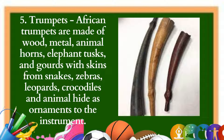5. Trumpets: African trumpets are made of wood, metal, animal horns, elephant tusks, and gourds, with skins from snakes, zebras, leopards, crocodiles, and animal hide as ornaments. They are mostly ceremonial in nature, often used to announce the arrival or departure of important guests, in religion and witchcraft. Some tribes believe in the magical powers of trumpets to frighten away evil spirits, cure diseases, and protect warriors and hunters from harm.